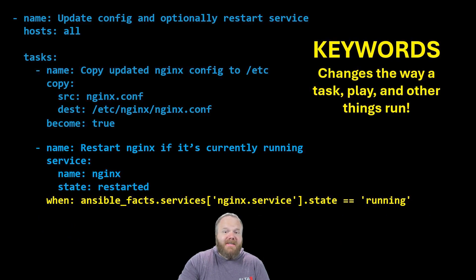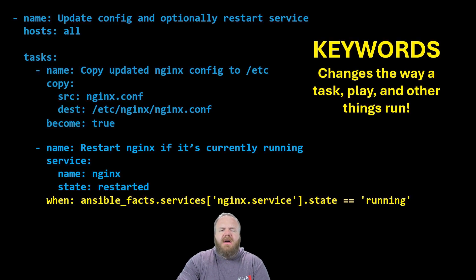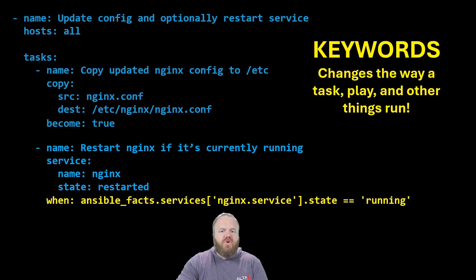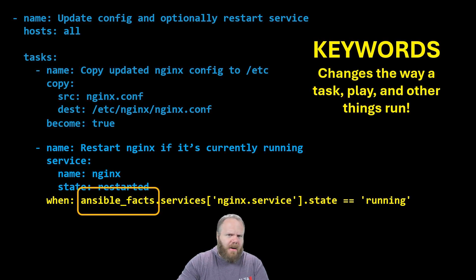And here's another keyword: when. What this is doing is looking through dot notation — from the Ansible facts variable, slice out the Nginx service, check its state. If that state is equal to running, then you should run this task. And if it's literally anything else, don't run this task. But yeah, that kind of begs the question: what are Ansible facts and where did that come from?